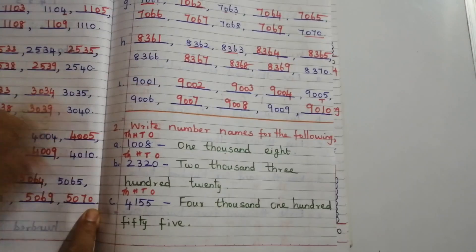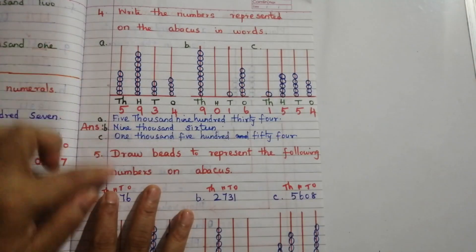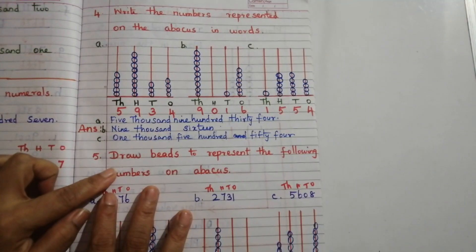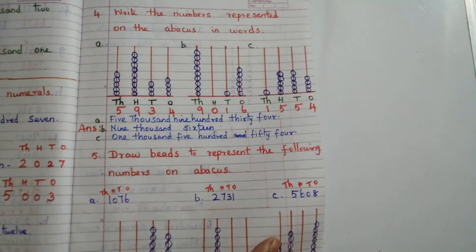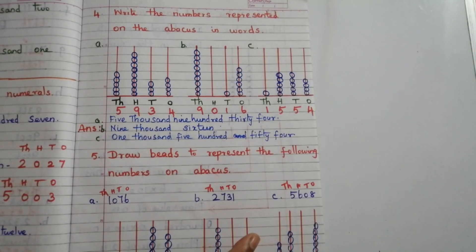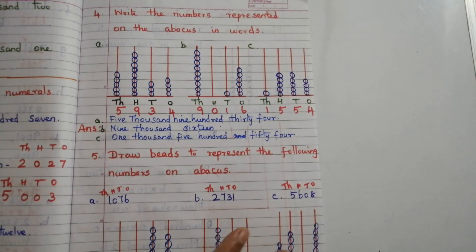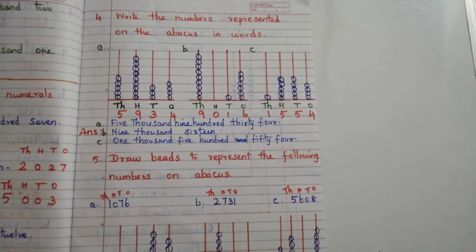Problem C: ones place has 8 beads, tens place has 0 beads (no beads), hundreds place has 6 beads, thousands place has 5 beads. Today we learned about missing numbers using four digits, writing number names for four-digit numbers, and abacus representation of four-digit numbers. In the next class we will discuss place value, face value, expanded form, and standard form.